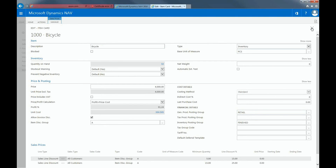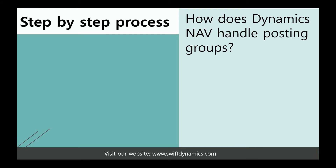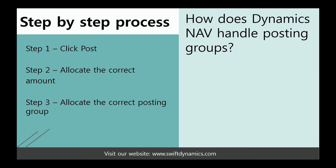Setting up different Posting Groups is a great way to organize your business. So how does Dynamic Snap handle Posting Groups? The easiest way to describe this is in a three-step process. Step one: you click Post on every document and journal that can be posted. Remember, you can choose the Preview Posting button to review the different types of entries that will be created when you post the document or journal. Step two: allocating the correct amount. Step three: allocating the correct Posting Group. NAV will need to know which specified general ledger accounts are affected when you post a transaction.